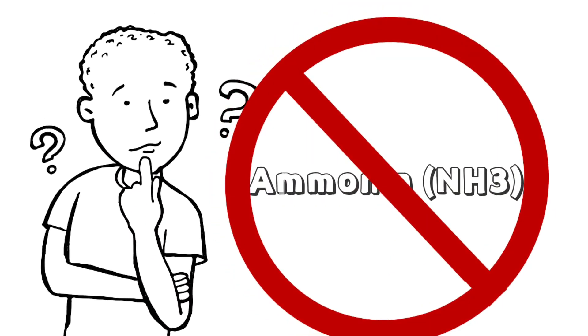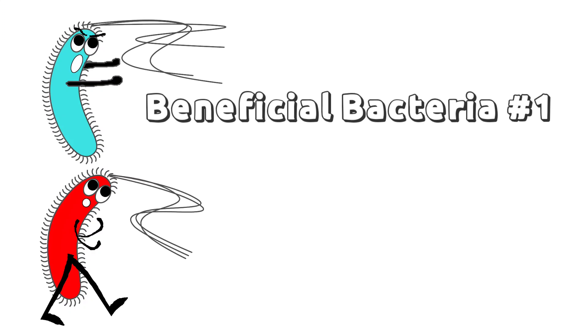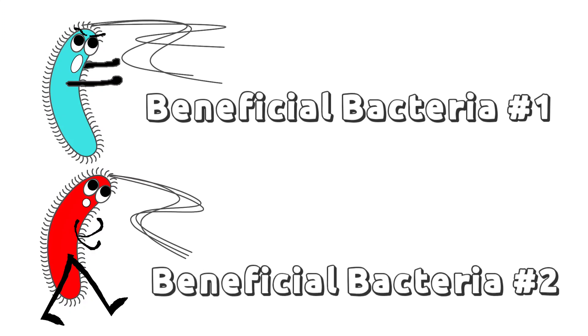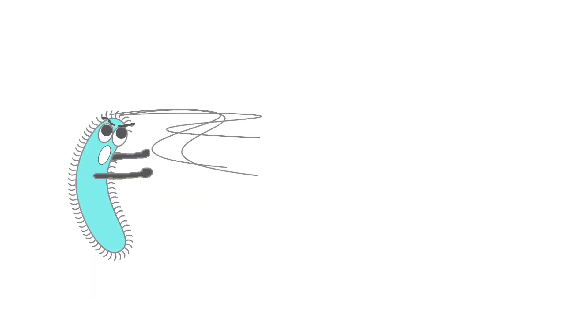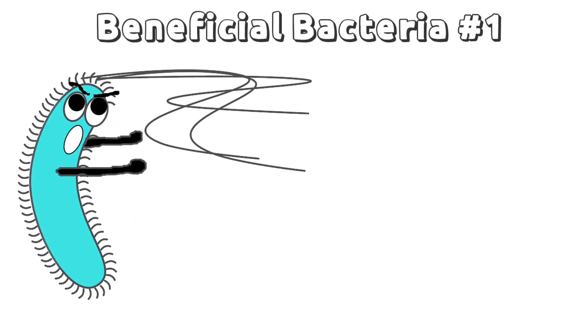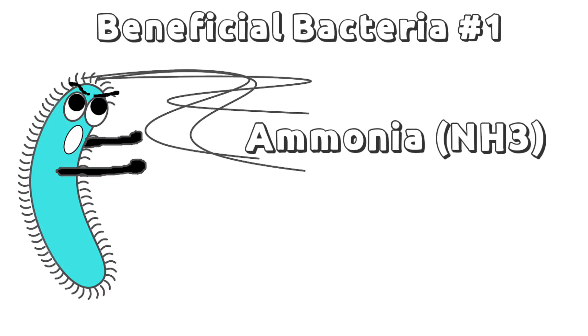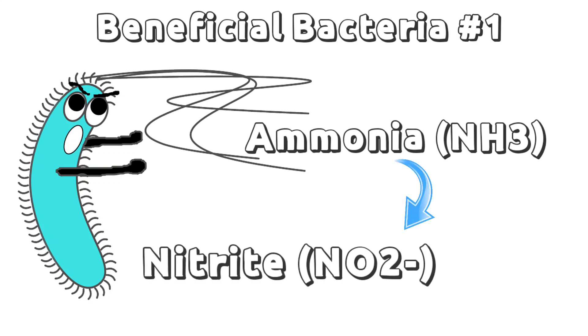To remove ammonia, we need the help of two nitrifying bacteria, commonly called beneficial bacteria one and beneficial bacteria two. Beneficial bacteria number one will oxidize the ammonia and convert it into nitrite.